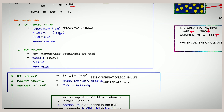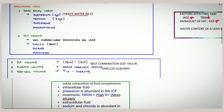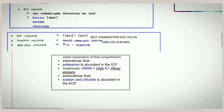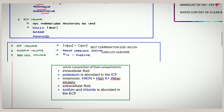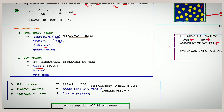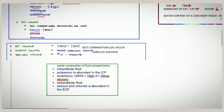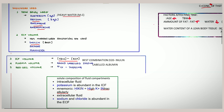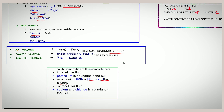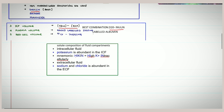Now, what indicators do we use? For total body water, we use deuterium (D₂O), or heavy water — the most commonly used — as well as tritium (³H₂O), antipyrine, and aminopyrine. For ECF, non-metabolized saccharides are used: inulin is the best, with sucrose and mannitol also acceptable. For ICF volume, use the indirect formula: total body water minus ECF, best as D₂O minus inulin. For plasma volume, use radio-labeled iodine or labeled albumin. For red cell volume, use 51-chromium tagging.